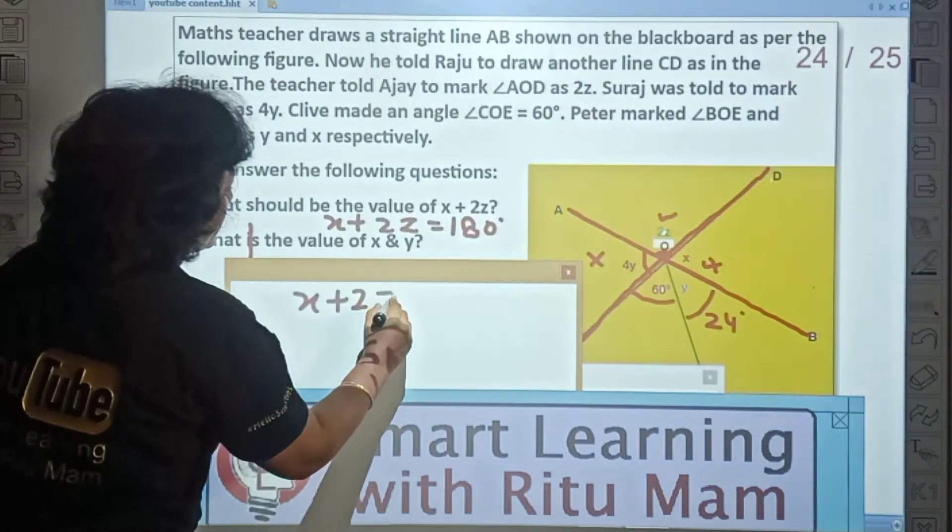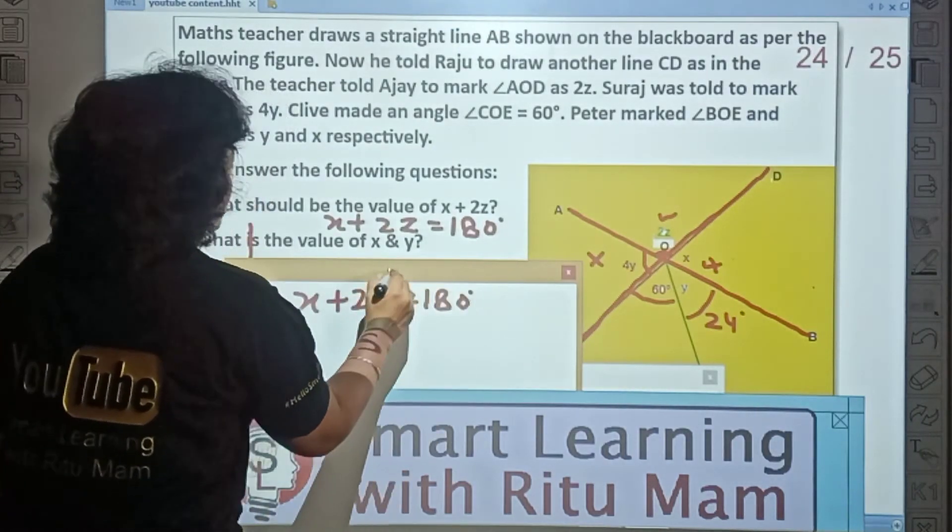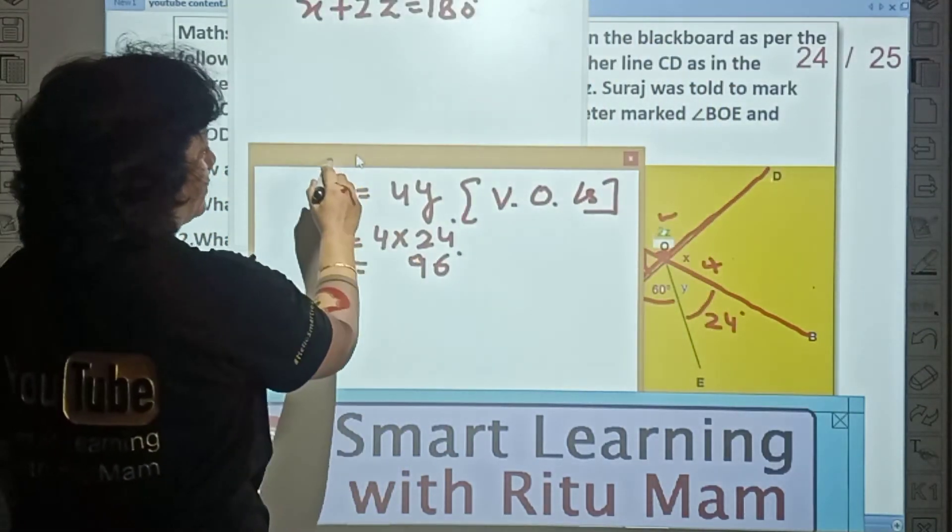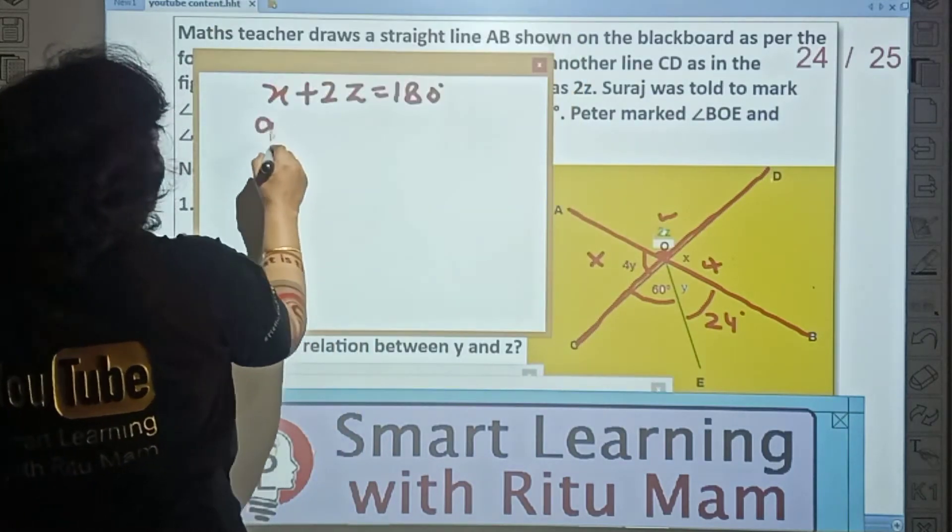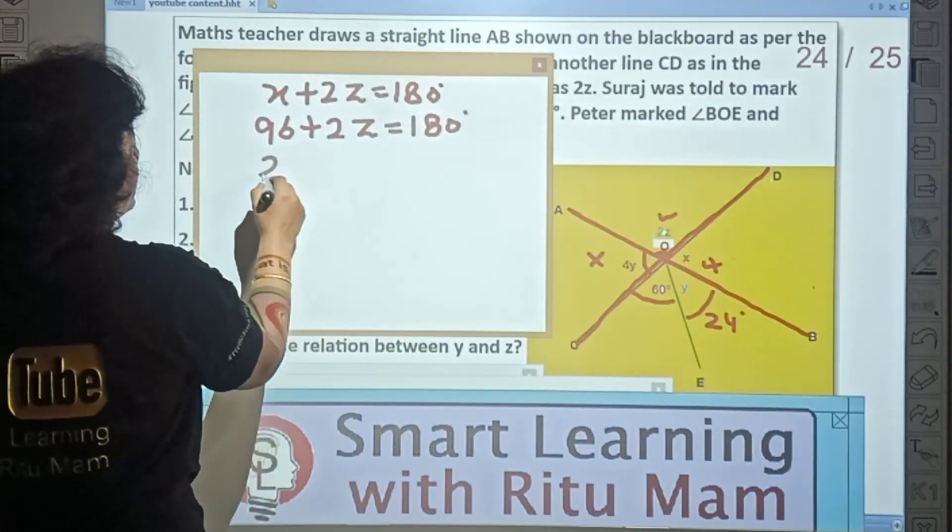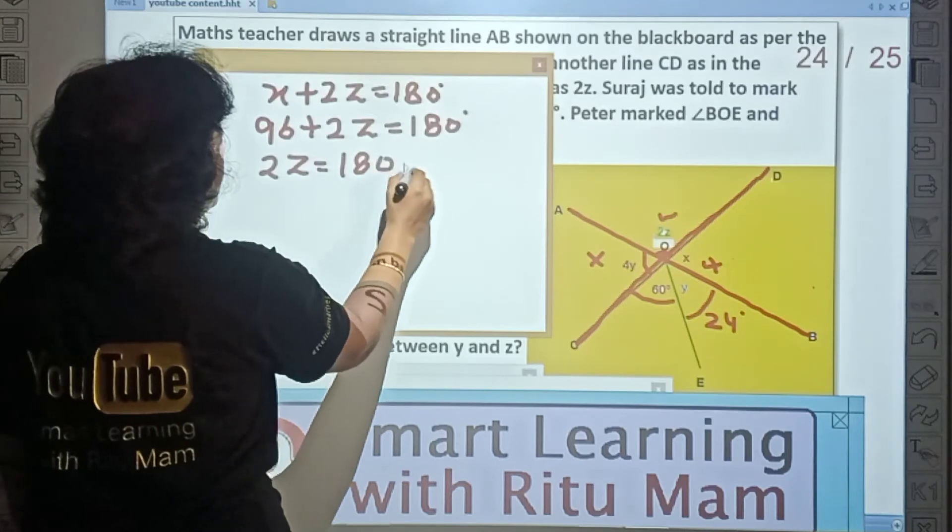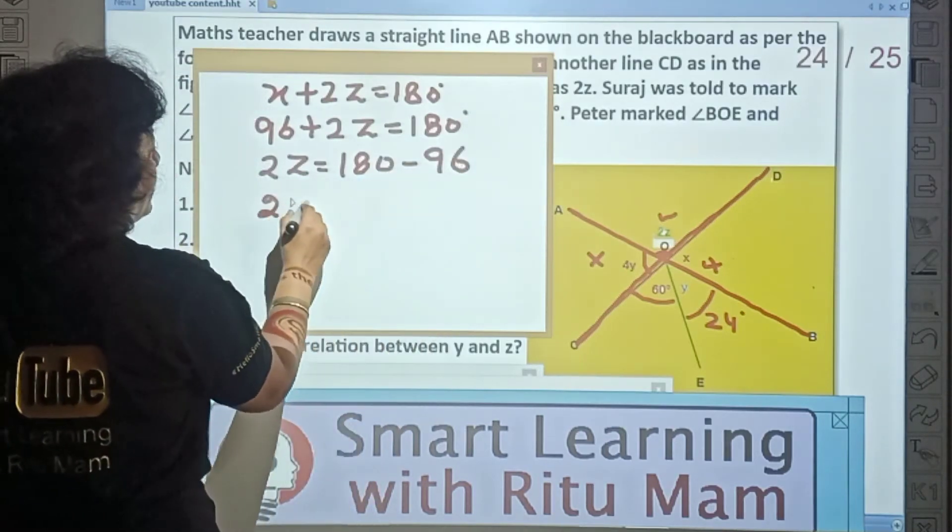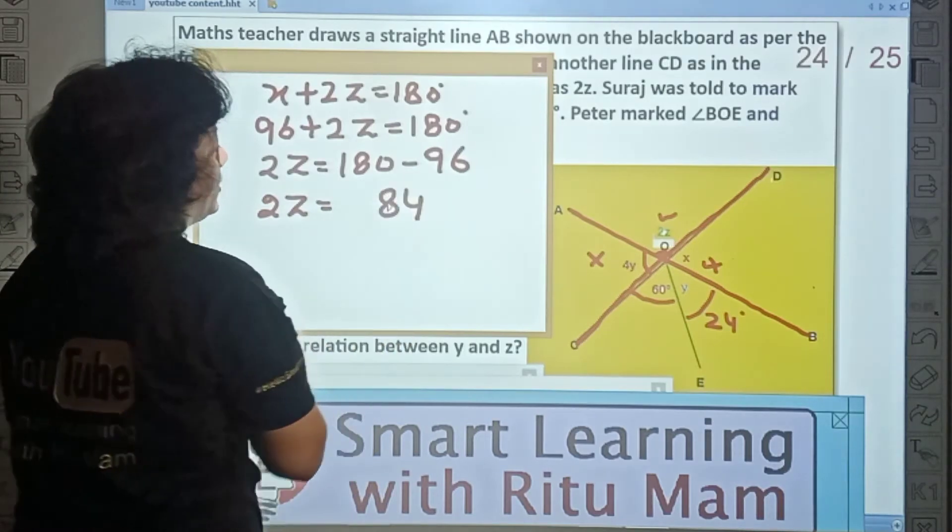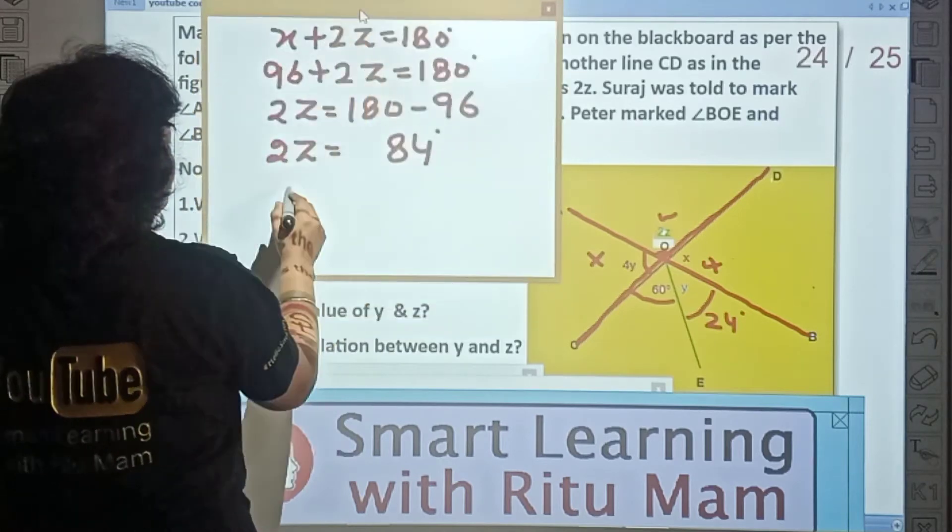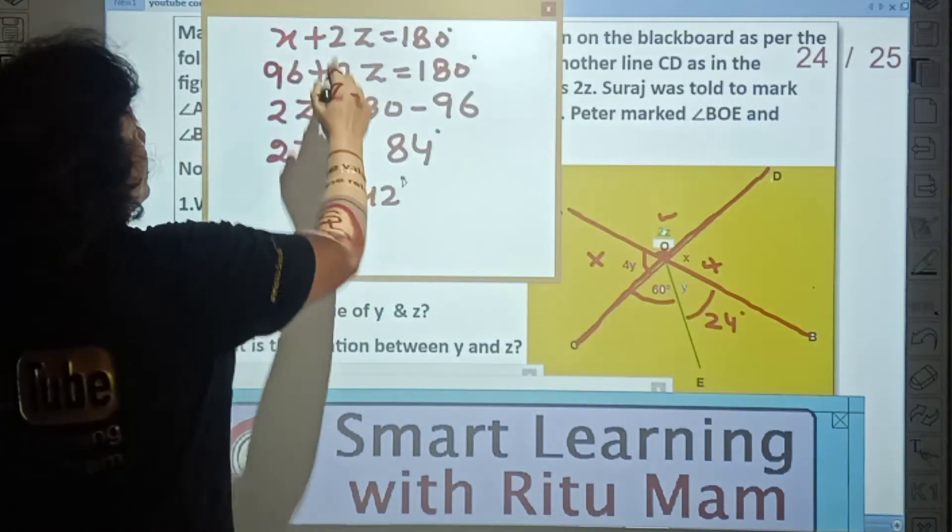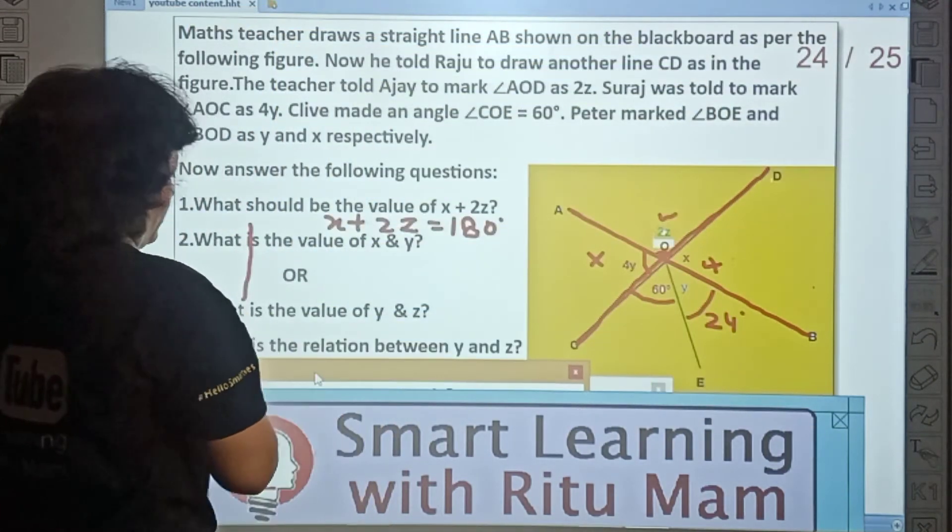X plus 2Z equal to 180. We just calculated X as how much? 96 degrees. So let's put the value. 96 plus 2Z equal to 180. So 2Z equal to 180 minus 96. From here we get it is 84. Let's solve. Z equal to divide by 2, which is 42.